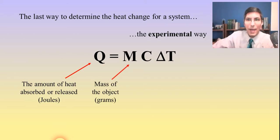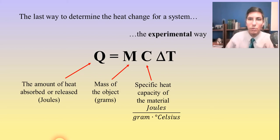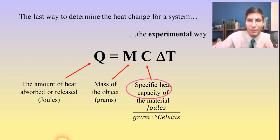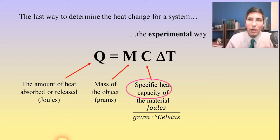M is the mass of the object, that's going to be in grams. C is the specific heat capacity of the material, and that's going to be given to us in joules per gram degree Celsius. Specific heat capacity is a way to measure how well a material resists temperature change.